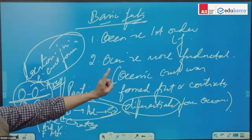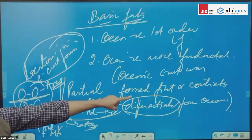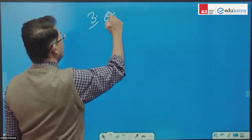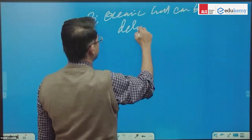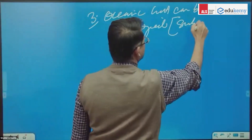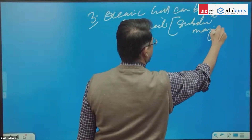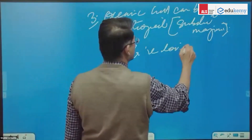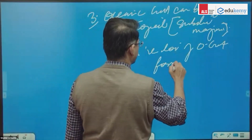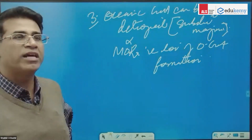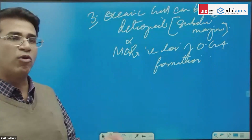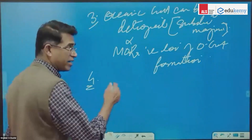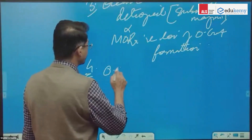Oceans are more fundamental and the oceanic crust was formed first; continents were differentiated from the oceans. Oceanic crust can be destroyed at the subduction margins. The MORs — mid-ocean ridges — are the locations of ocean crust formation through the seafloor spreading process.